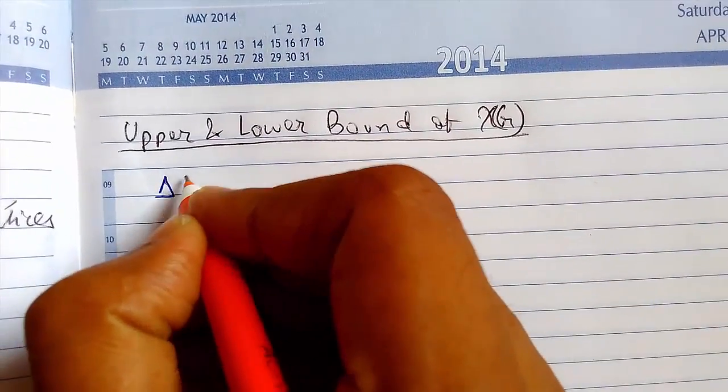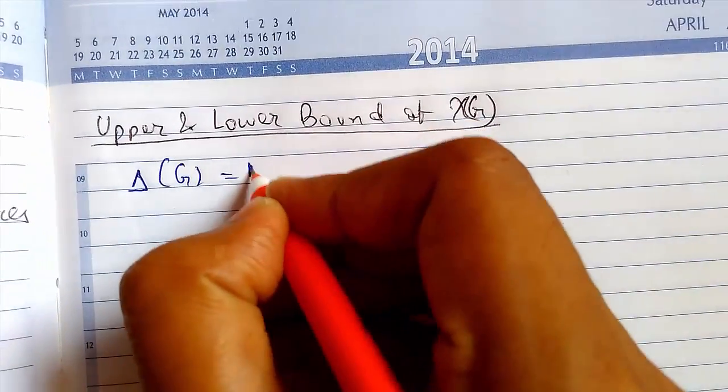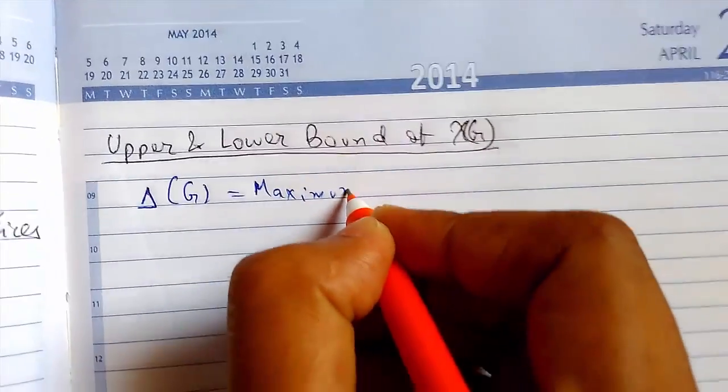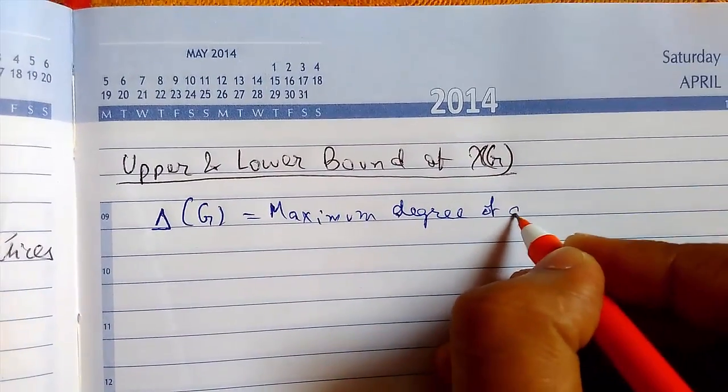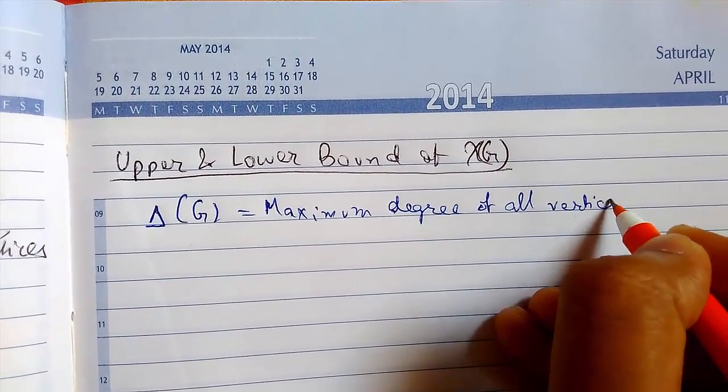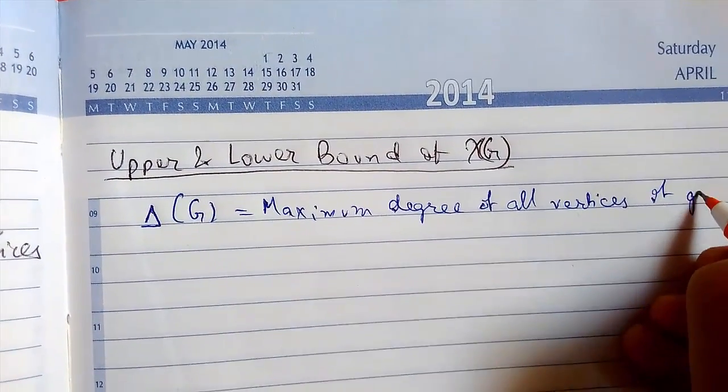So we define something by Δ(G). So maximum degree of all vertices of a graph G.